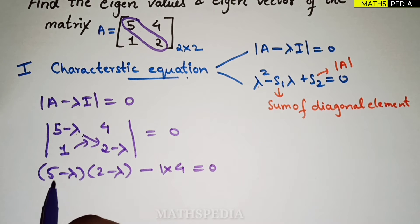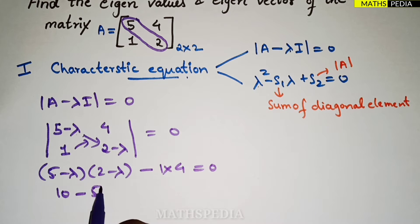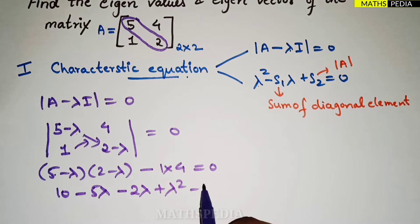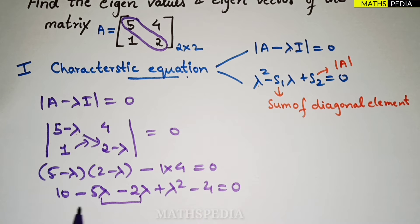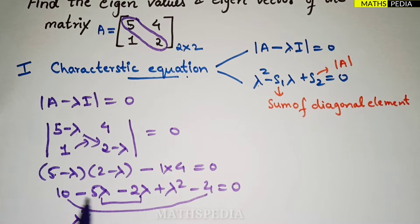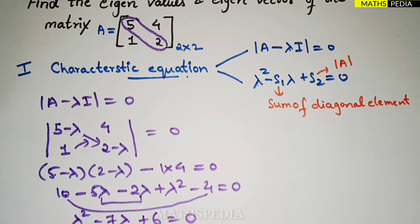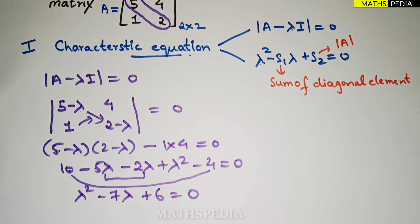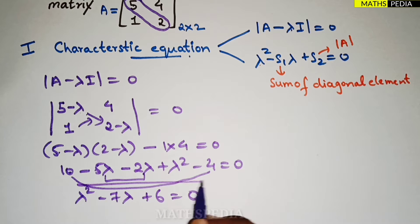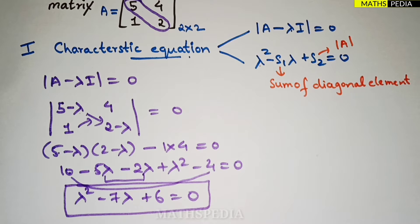Expanding: 10 − 5λ − 2λ + λ² − 4 = 0, which simplifies to λ² − 7λ + 6 = 0. This is the characteristic equation.